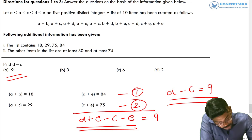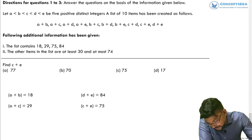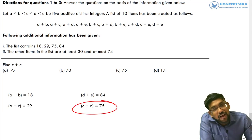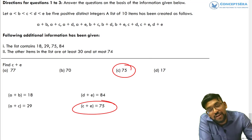Let's move further and look at second question here. The second question is C plus E. C plus E is directly given to us here 75. So right answer for this question is 75.